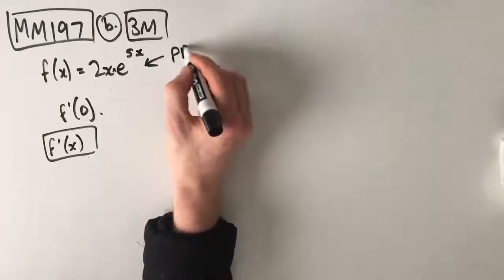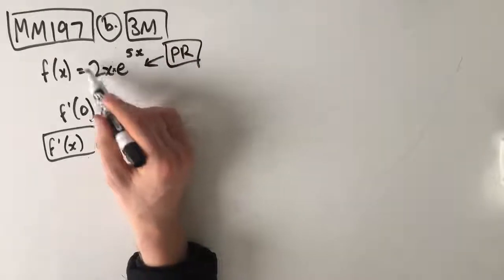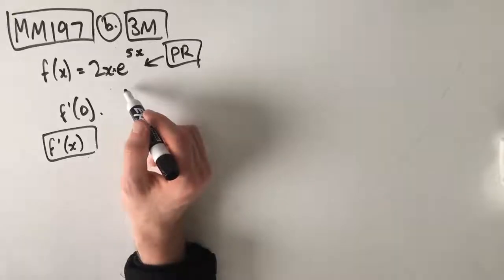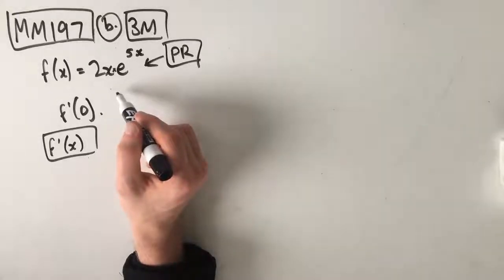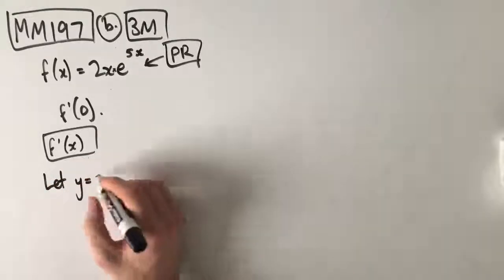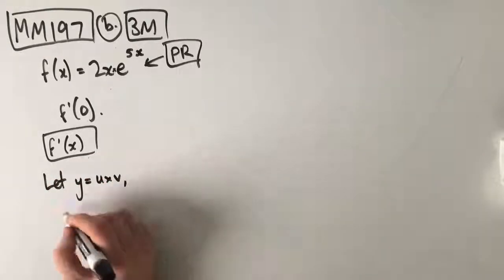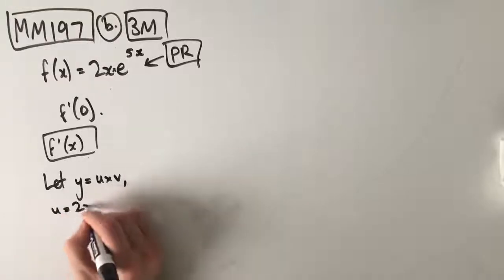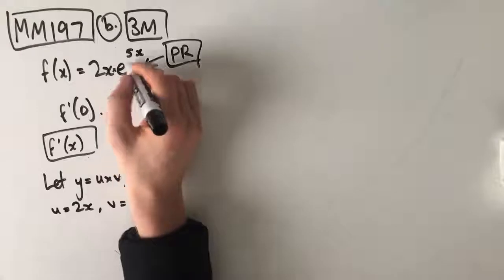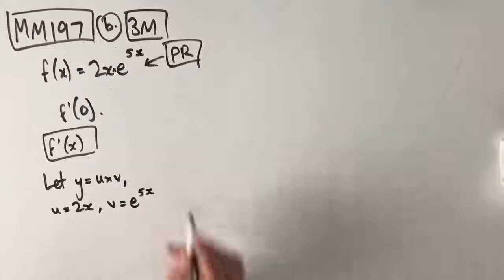We're going to need to use our product rule because this is a function, 2x, multiplied by another function, which is e to the power of 5x. So, from here, what we're going to do is we're actually going to let y equal u times v, where u equals 2x. So, u is our 2x and v is equal to our e to the 5x.